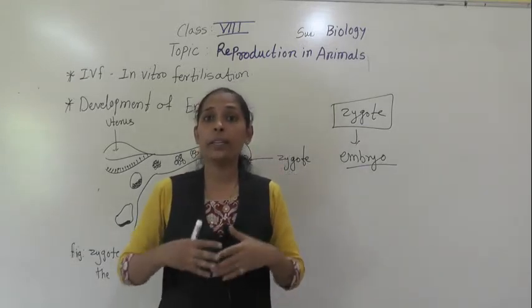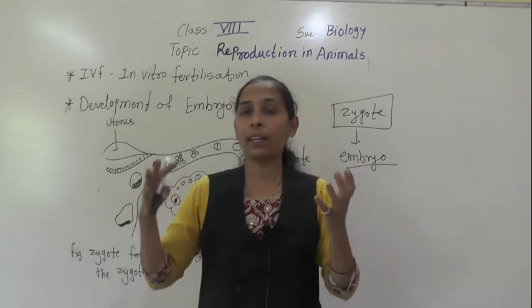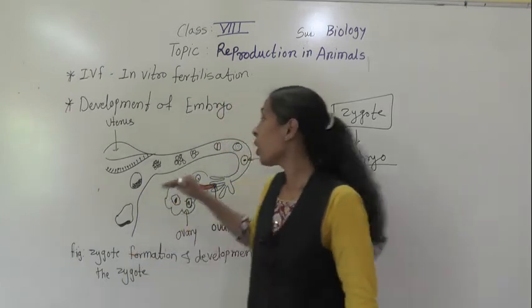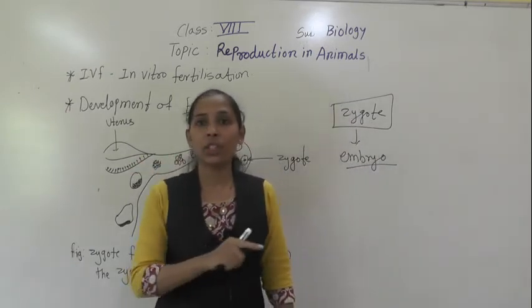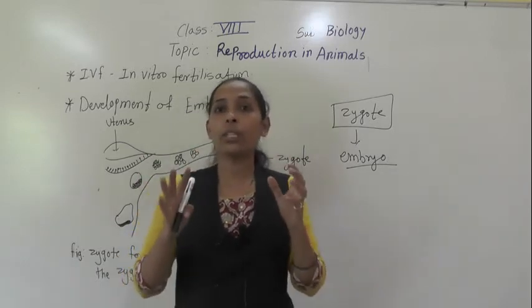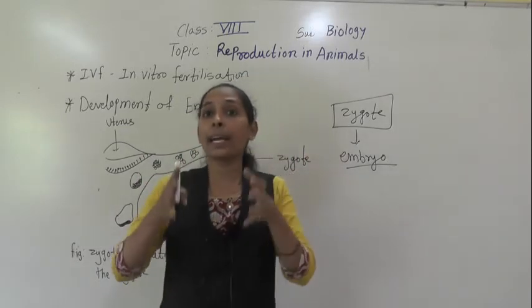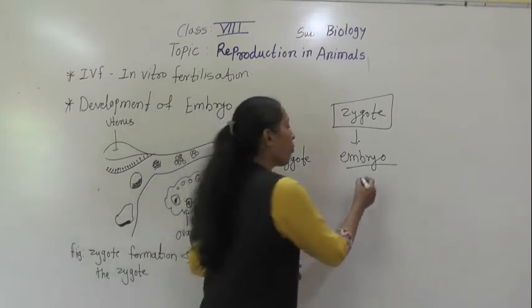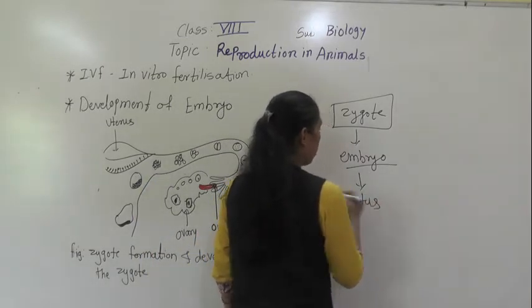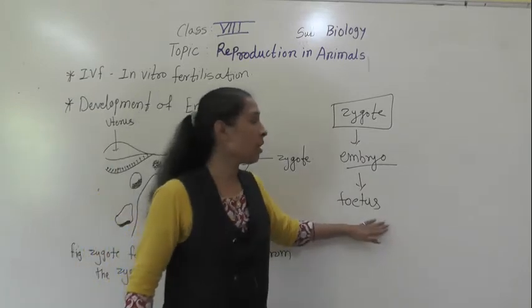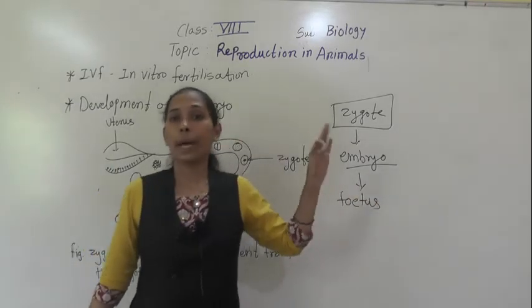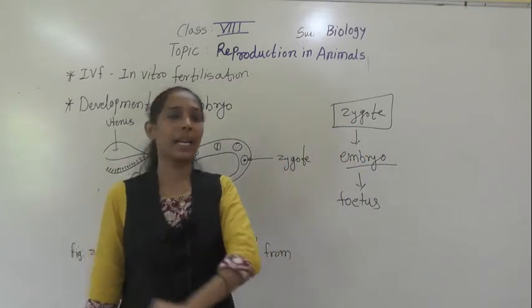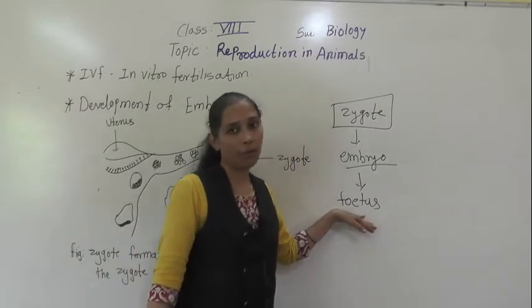Once the embryo is embedded in the wall of the uterus, further development happens. The embryo starts to develop different body parts like legs, hands, ears, eyes, and nose — all these body parts start to form in the embryo in the uterus. The stage when the embryo has all the identifying body parts is called the fetus. That stage is called the fetus.